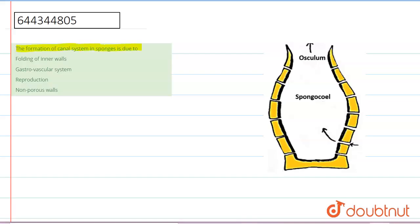of canal system in sponge is due to: first, folding of inner wall; second, gastrovascular system; third, reproduction; and fourth, non-porous wall. Okay, so see, first of all, this structure is a sponge. So in this sponge